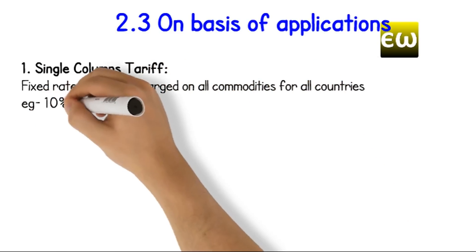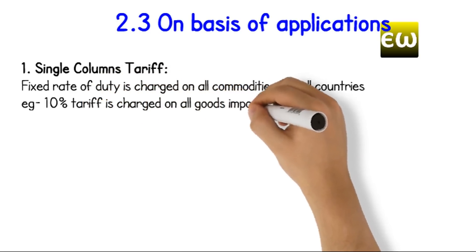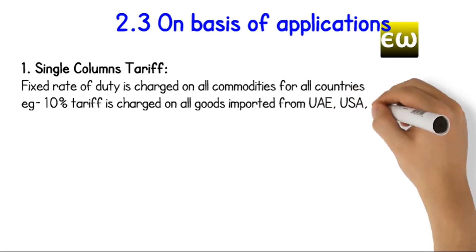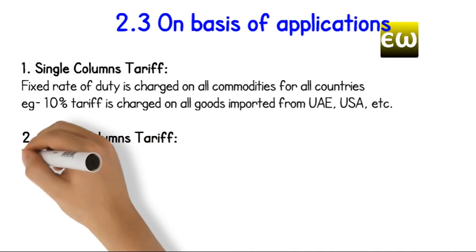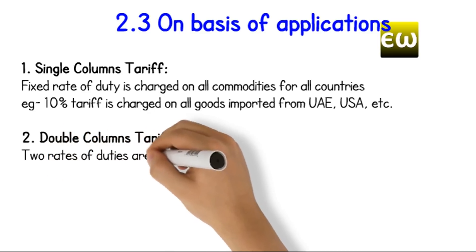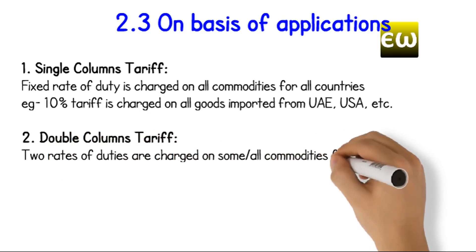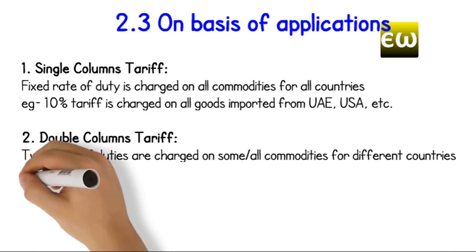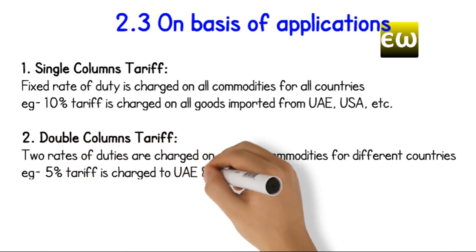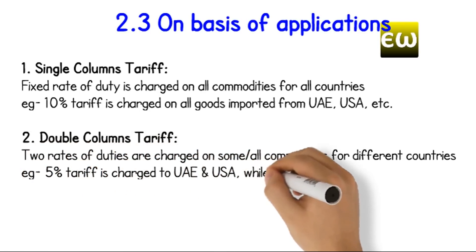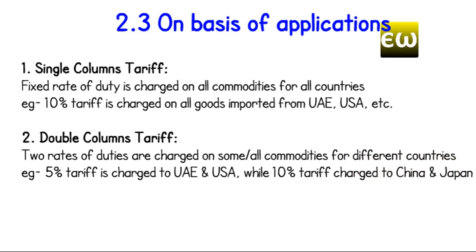On the basis of application: 1. Single column tariff — for example, 10% tariff is charged on all goods imported from UAE, USA, etc. 2. Double column tariff: two rates of duties are charged on some or all commodities for different countries — for example, 5% tariff is charged to UAE and USA, while 10% tariff is charged to China and Japan.